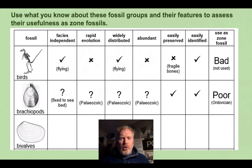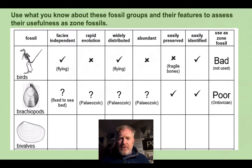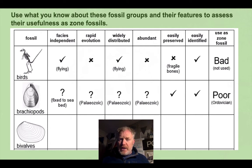You can see on the worked examples I've given you here, some of these I've ticked where this particular group of organisms is good at that particular thing. So for example, for the birds, they are facies independent — they don't live in one particular sedimentary environment because they fly. So we tick that because that's a good feature for use as a zone fossil, and I've put in brackets a brief explanation of that.